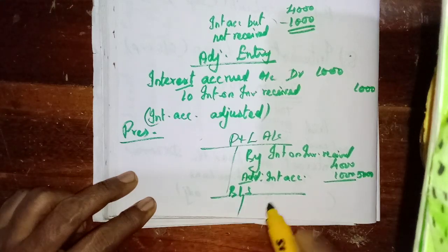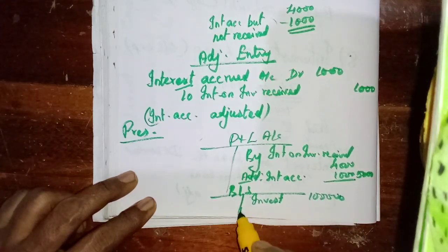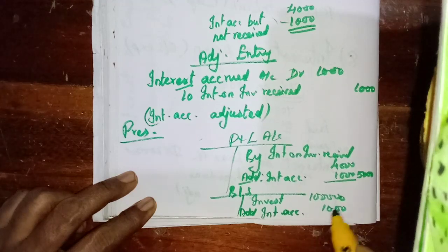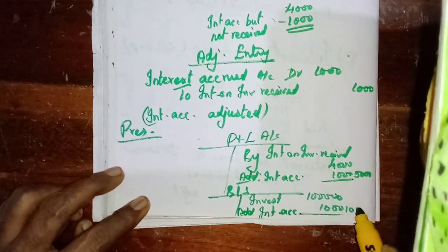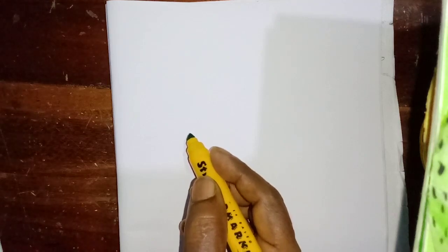Then in the balance sheet, on the asset side, we will write Investment 1,00,000, then add Interest Accrued 1,000. Now we have completed around 9 adjustments.